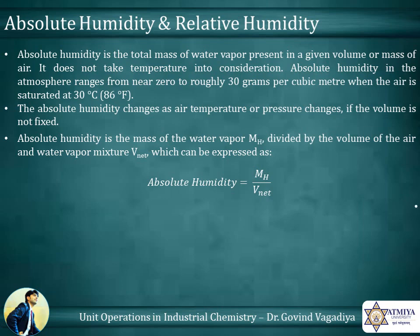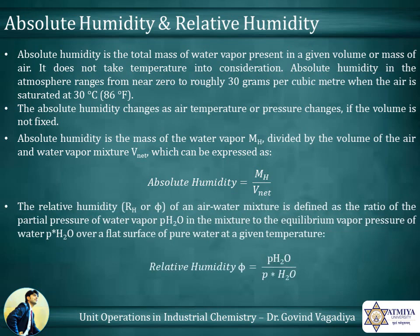The relative humidity, Rh, of an air-water mixture is defined as the ratio of the partial pressure of water vapor, pH₂O, in the mixture, to the equilibrium vapor pressure of water, p* H₂O, over a flat surface of pure water at a given temperature.